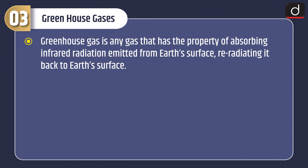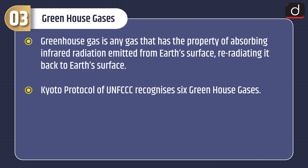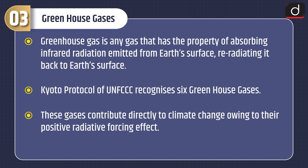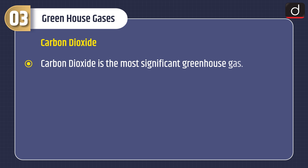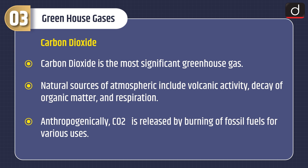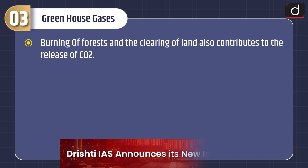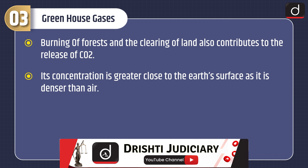Let us see what greenhouse gases are. A greenhouse gas is any gas that has the property of absorbing infrared radiation emitted from Earth's surface and re-radiating it back to Earth's surface. The Kyoto Protocol of UNFCCC recognizes six greenhouse gases, which contribute directly to climate change owing to their positive radiative forcing effect. First, carbon dioxide: the most significant greenhouse gas. Natural sources include volcanic activity, decay of organic matter, and respiration. Anthropogenically, carbon dioxide is released by burning fossil fuels, burning of forests, and clearing of land. Its concentration is greater close to the Earth's surface as it is denser than air.